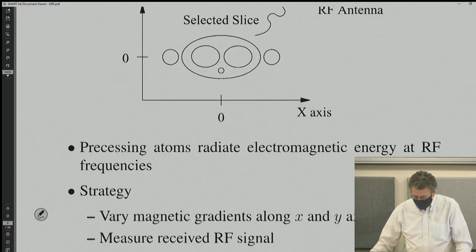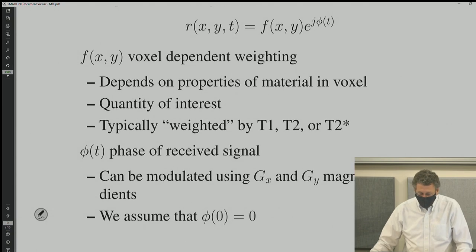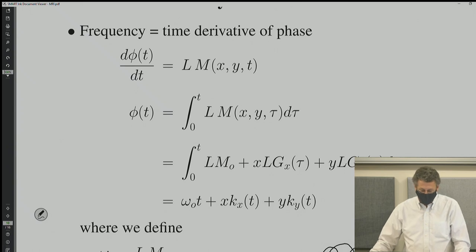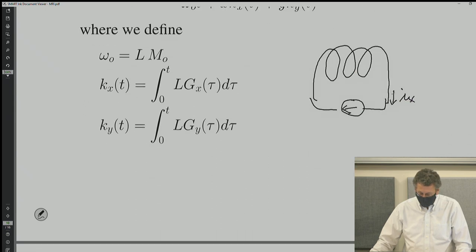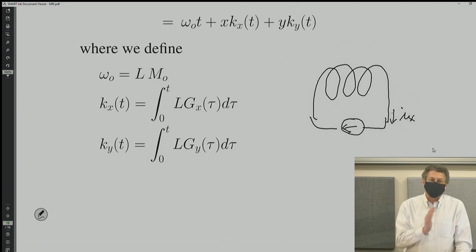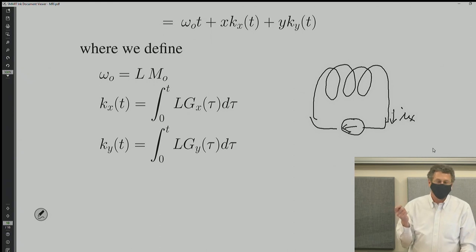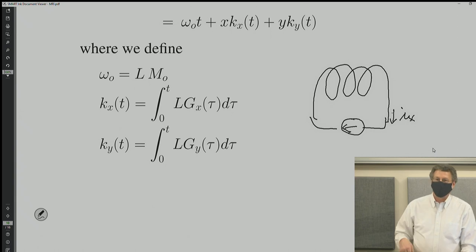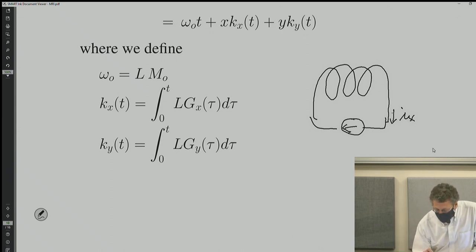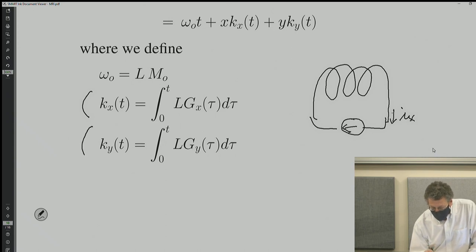The slice select is like plucking a violin string — I'm going to use that analogy for the rest of my life. It's like you plucked the violin string and now the violin string is vibrating. You now change the gradients in time along the x and y axis. Because the magnetic field is changing locally, the frequency that the string is vibrating at will shift — it's like you're modulating the frequency. We go through all these calculations and we get that expression. kx is going to be the integral of the gradient in time, and ky is the integral of the y-gradient in time.